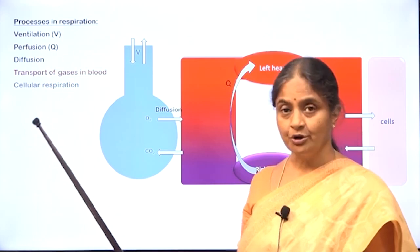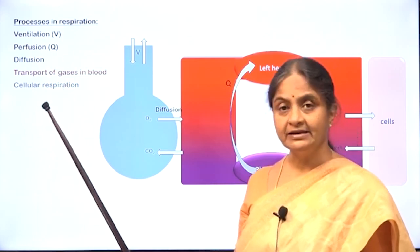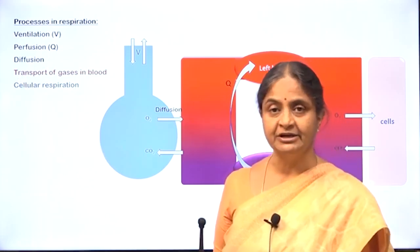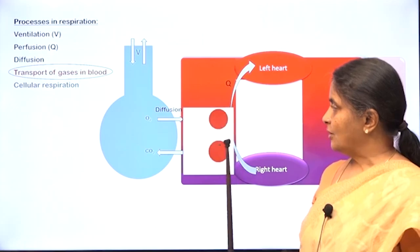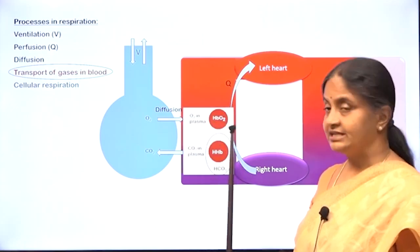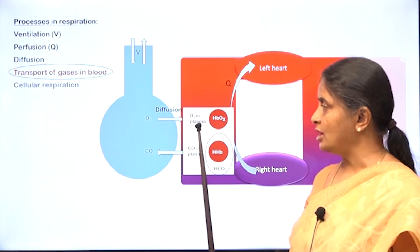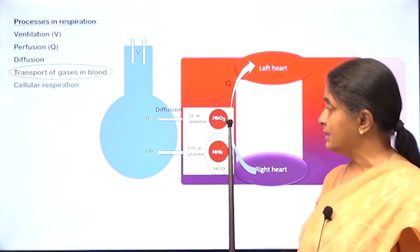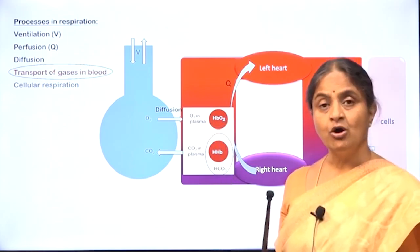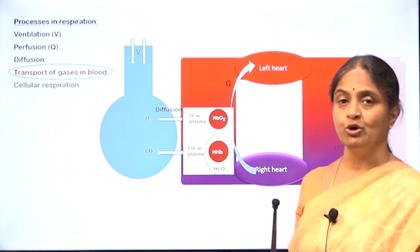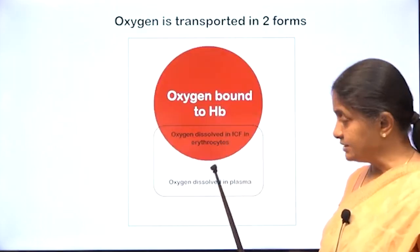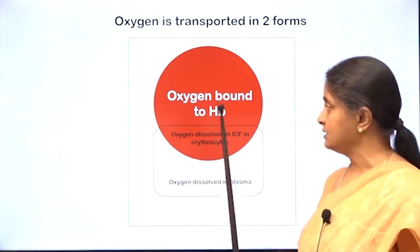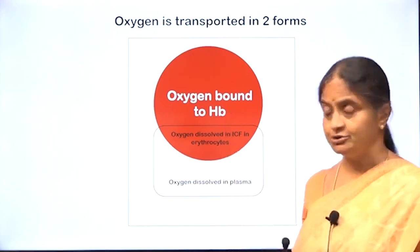We decided to go in the reverse order. Having completed cellular respiration in the previous session, we will now look at transport of gases in blood, in particular oxygen. Oxygen travels in two major forms in blood: one that is dissolved in plasma as well as erythrocyte intracellular fluid, and the other is oxygen loosely bound to hemoglobin. We will refer to these collectively as dissolved oxygen and oxygen bound to hemoglobin.